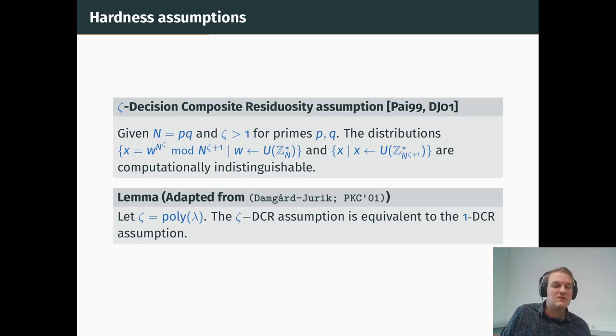Let me first recall what is the ζ-th decision composite residuosity assumption. Basically, taking N, an RSA modulus, it is hard to distinguish between a random N to the ζ-th residue, or N to the ζ plus 1, and a random invertible element of Z, N to the ζ plus 1. It has the nice property that will let us reach the unboundedness, that for any ζ polynomial in lambda, then the ζ-DCR assumption is equivalent to the 1-DCR assumption. So it means that with one CRS comprised of N, the RSA modulus, you are able to do a lot of different instantiations of the DCR.